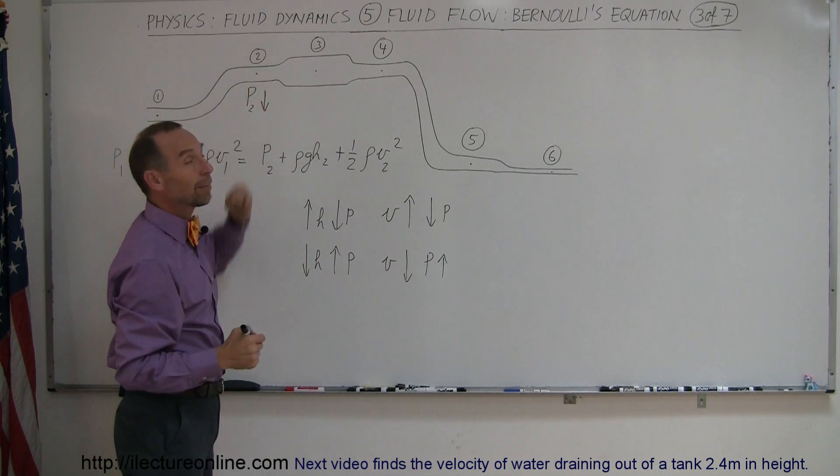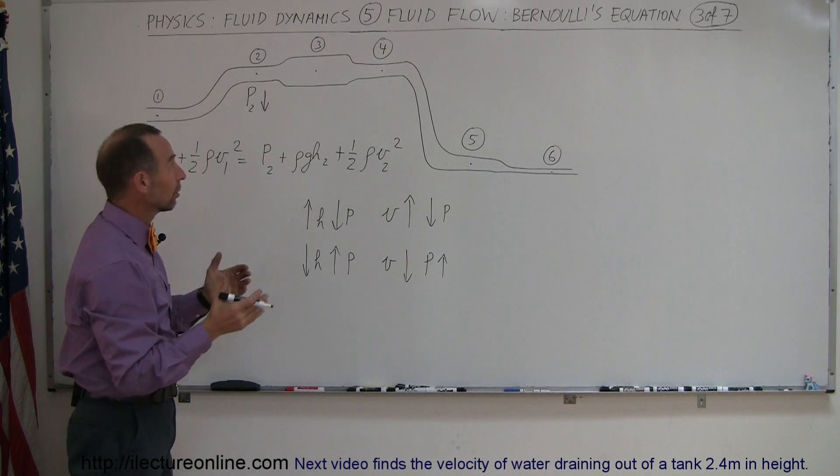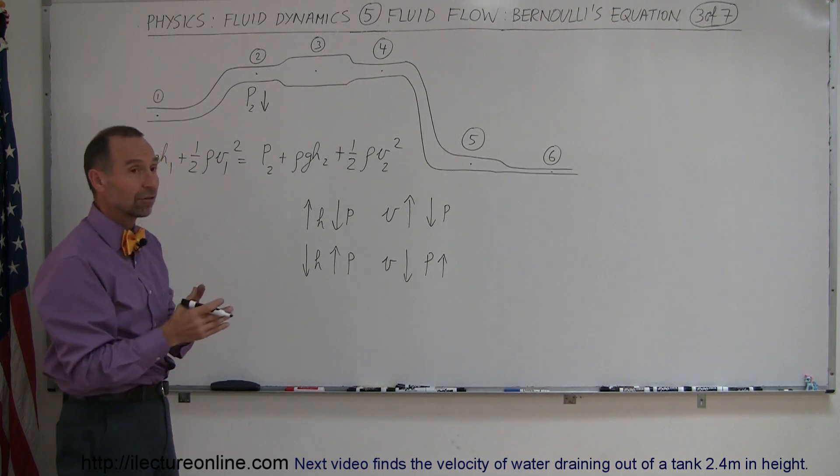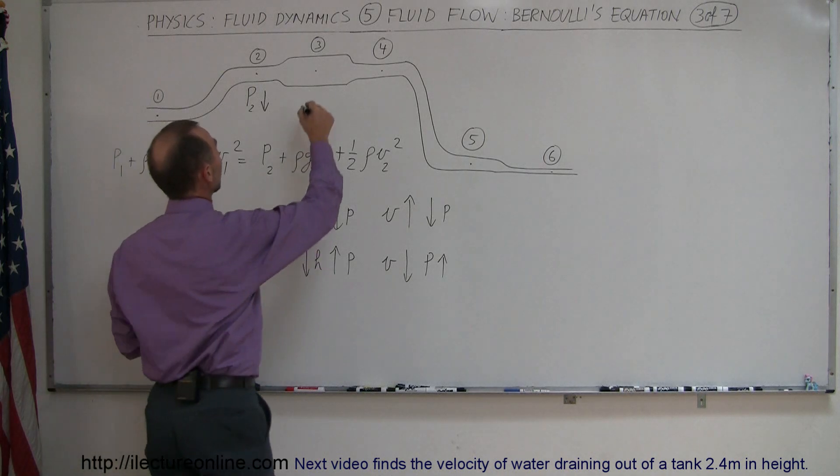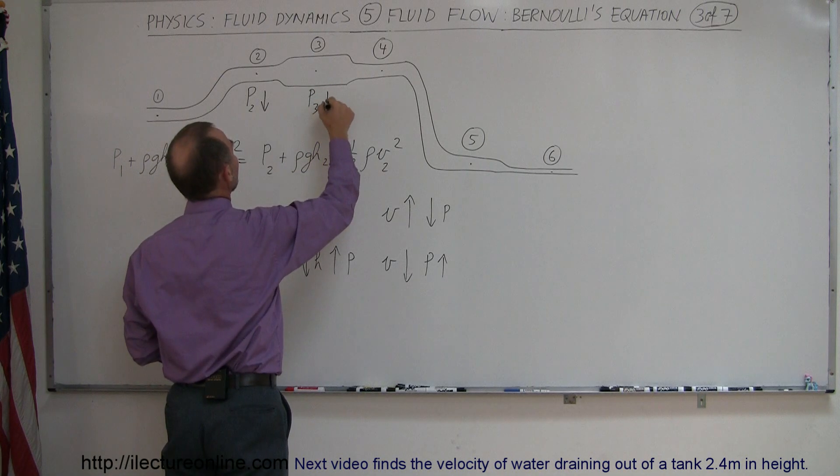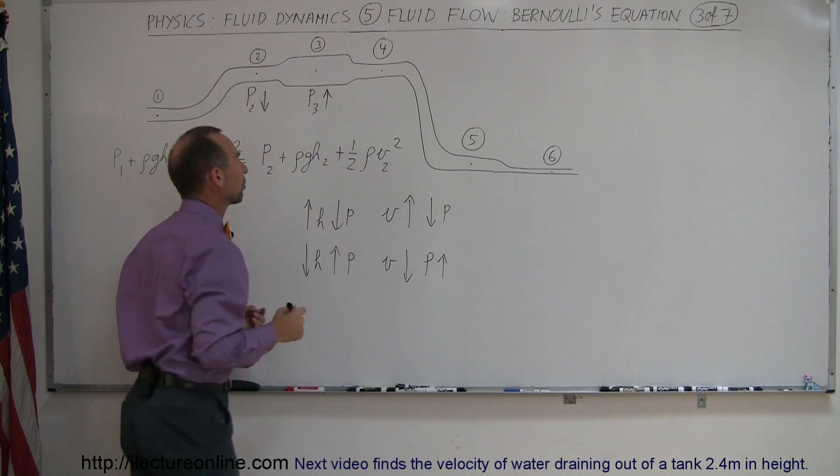Now the pipe gets wider. If the pipe gets wider, the velocity will slow down. If the velocity slows down, then the pressure will increase. So we can say that pressure at 3 will increase as compared to pressure at point 2.